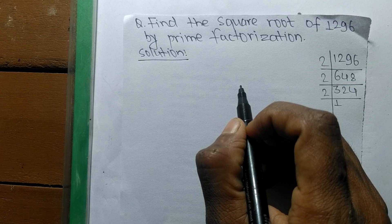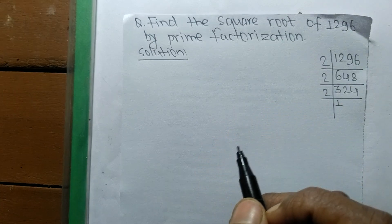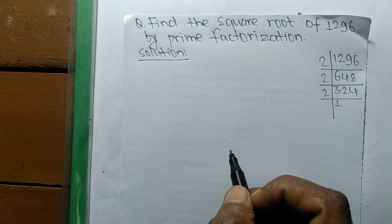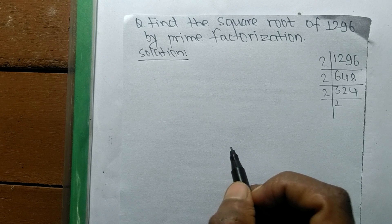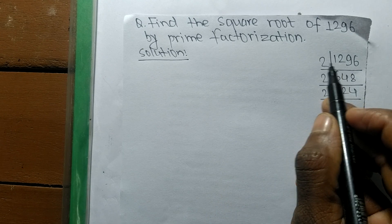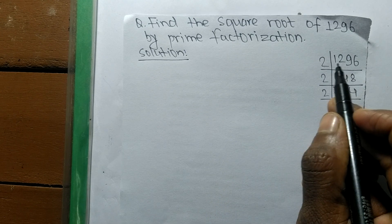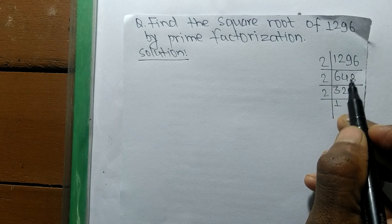To find the square root by prime factorization method, first we have to find the prime factors of the given number. So it is 2 times 6 means 12, like 2 times 4 means 8, remaining is 1.